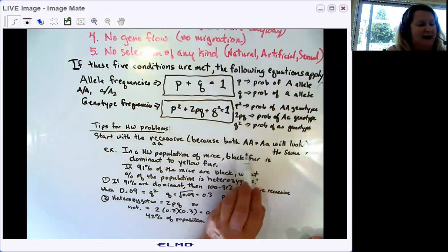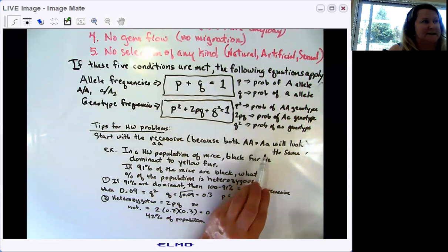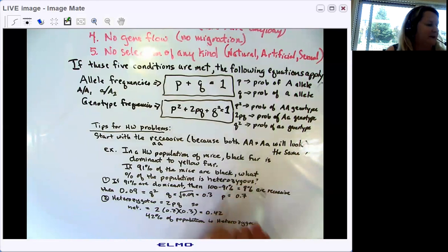If you started with the dominant individuals, you wouldn't know what genotype they had because some of them are going to be homozygous dominant, some of them are going to be heterozygous. And they're basically going to look the same on the outside in terms of phenotype. So let's start with the recessive and do a sample problem.